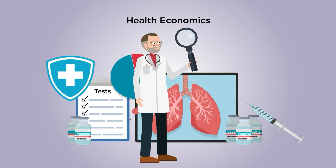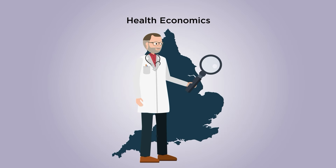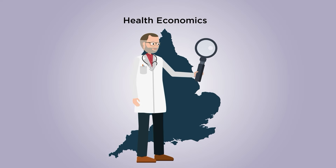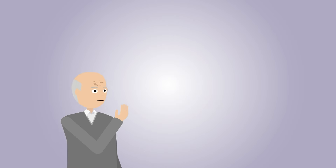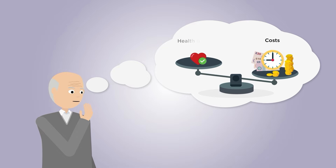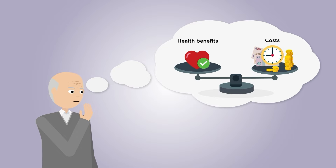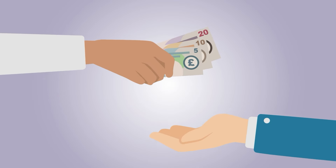But how do we compare the impact of the effects of vaccines on the health of the population with the cost of vaccination? Health economists help healthcare providers to make decisions about how cost-effective vaccination programmes are. They weigh up the health benefits and monetary costs by looking at different measures of health, such as the number of years people are likely to live in good health, and they compare the costs of vaccination with other healthcare costs such as the cost of hospital stays.